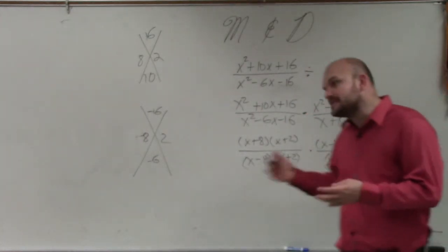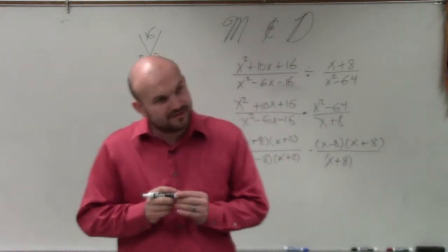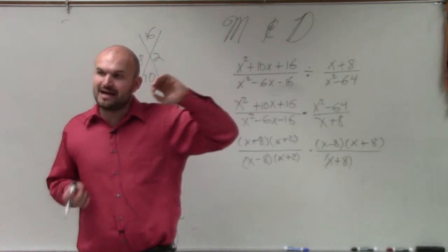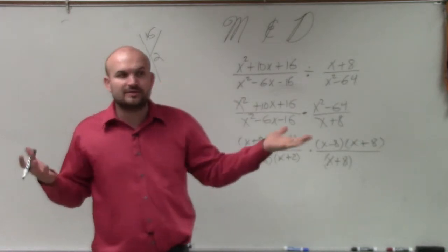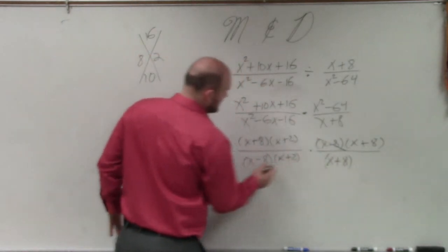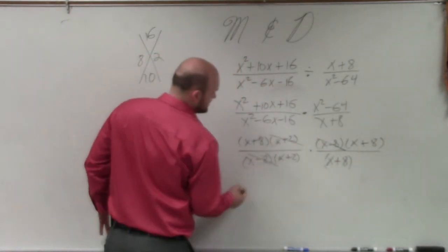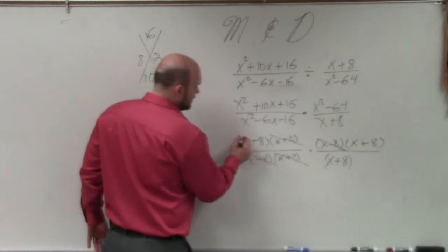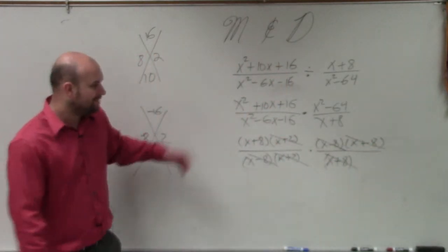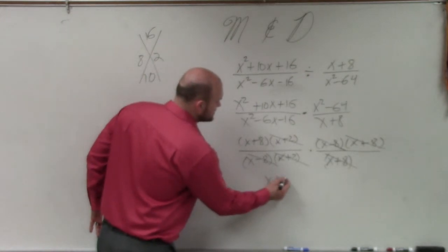Now, the third step is to use what we call the division property, which basically says when you have the same terms or expressions divided by each other, then you can simply divide them to 1. So here I have x minus 8 and x minus 8, x plus 2 and x plus 2, x plus 8 and x plus 8. So the only thing I'm left with is x plus 8.